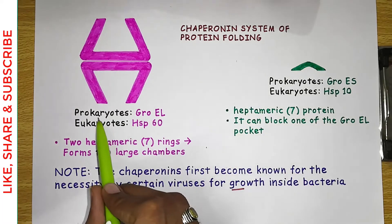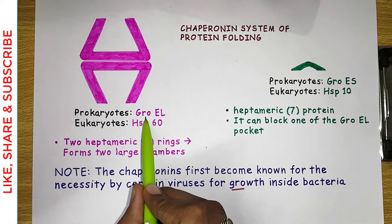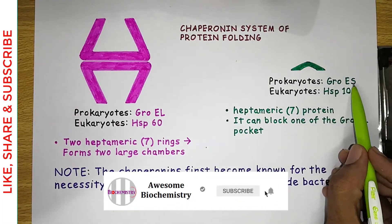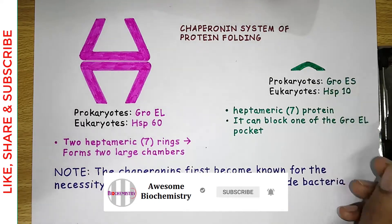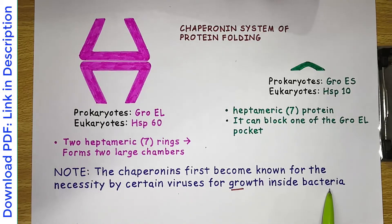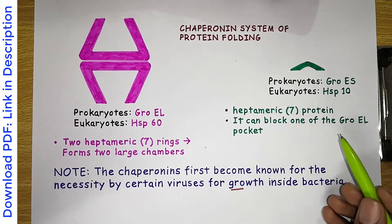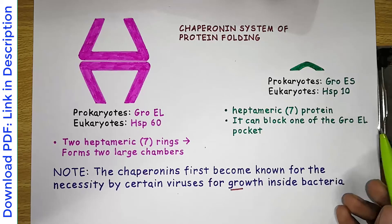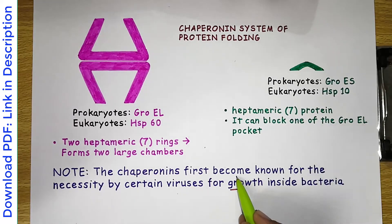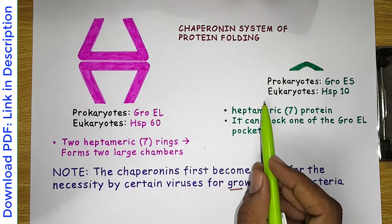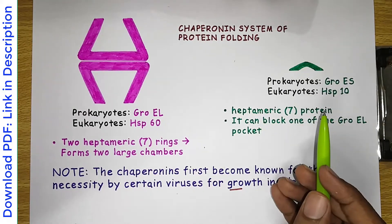You might be wondering why the 'Gro' designation is given to these proteins in prokaryotes — Gro in GroEL and Gro in GroES. The reason is a very interesting one: chaperonins first became known for their necessity by certain viruses for growth inside bacteria. Earlier it was thought that GroEL and GroES are actually growth factors for certain viruses in bacteria, which is why the 'Gro' designation was given. It was found later that these proteins are actually major components of the chaperonin system.